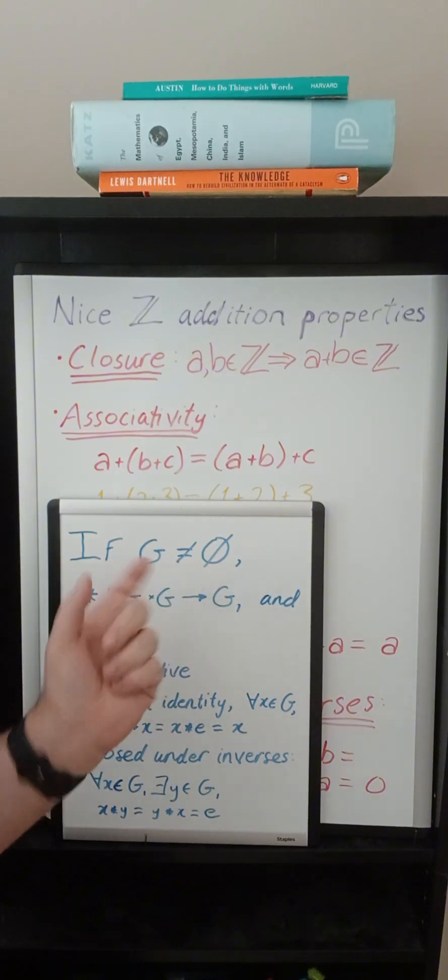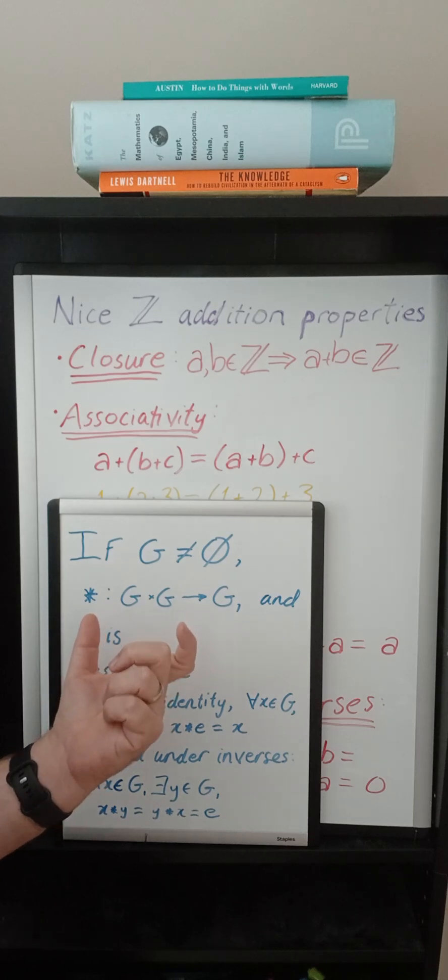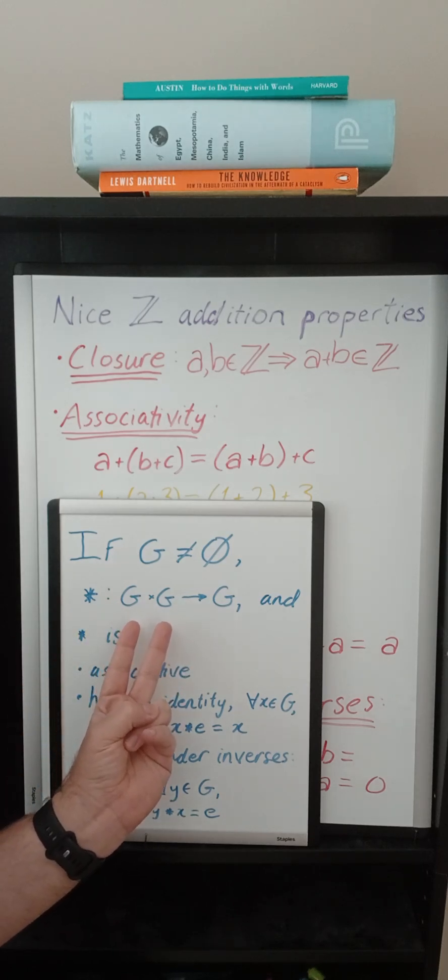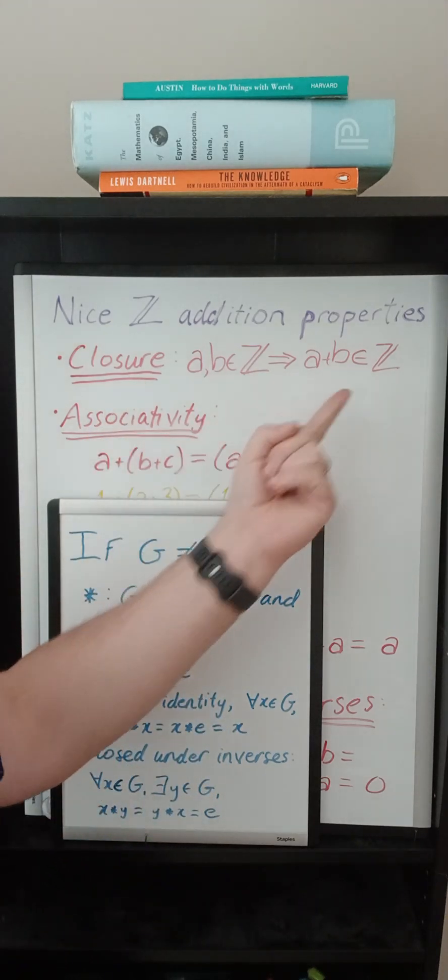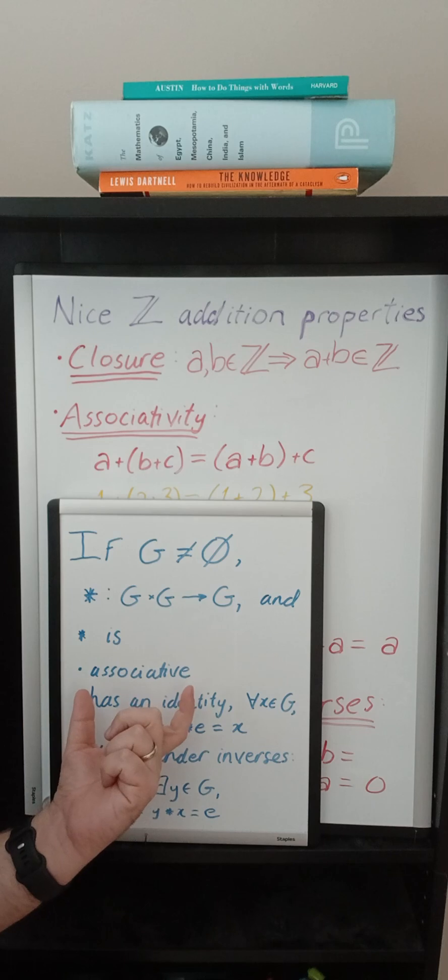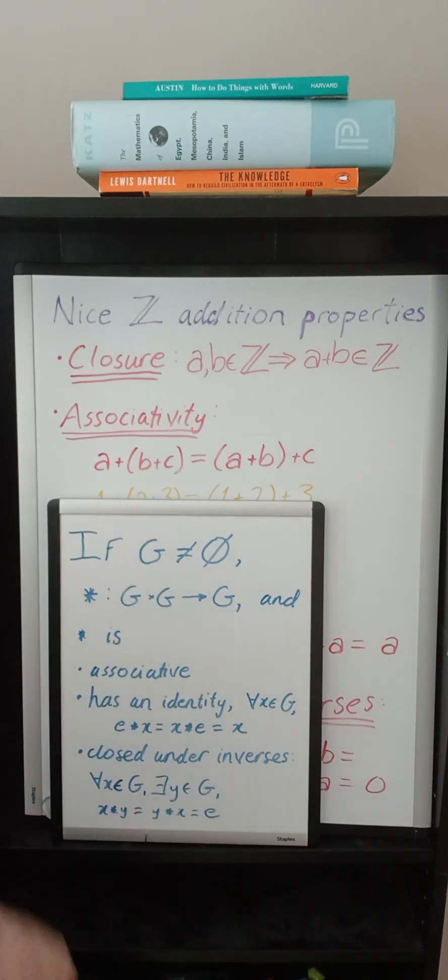So to do that we're going to have any set G that is non-empty, here that was the integers. It must have an operation, being an operation means you input two elements from G and you output an element from G, so that was the plus operation up here. And if this operation is associative, has an identity element, and is closed under inverses, then we call this a group.